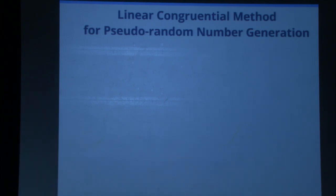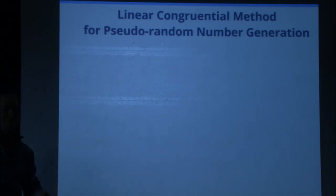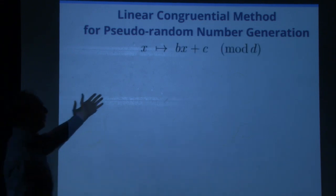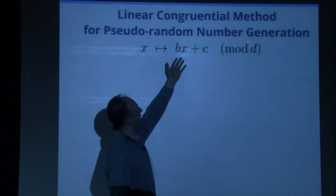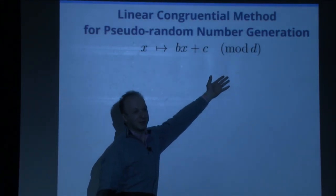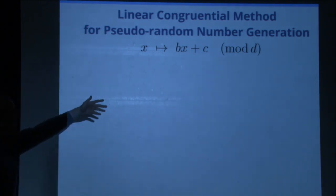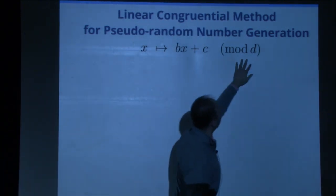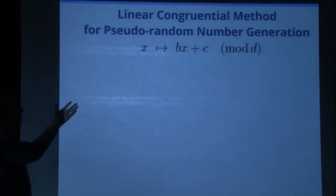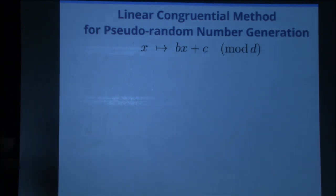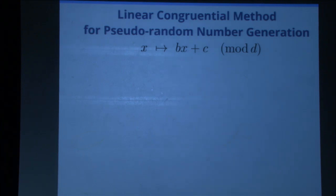The next topic is the linear congruential method for pseudorandom number generation. If someone woke you up in the middle of the night and said 'make me a pseudorandom number generator,' the dumbest thing you'd think of is: take a number, multiply it by something, add something, and reduce mod something. It's called pseudorandom because it's not really random — it's completely deterministic, but it behaves like a random number generator.